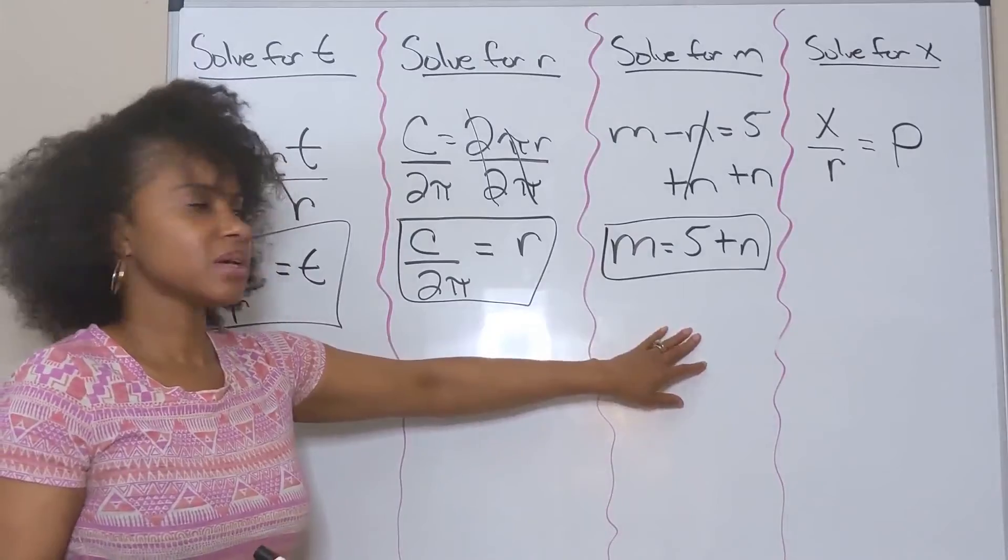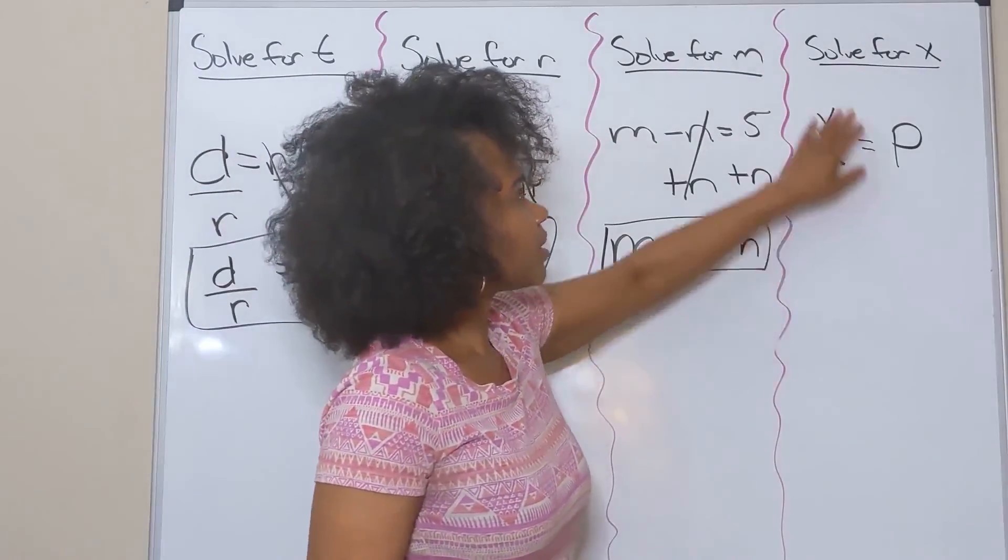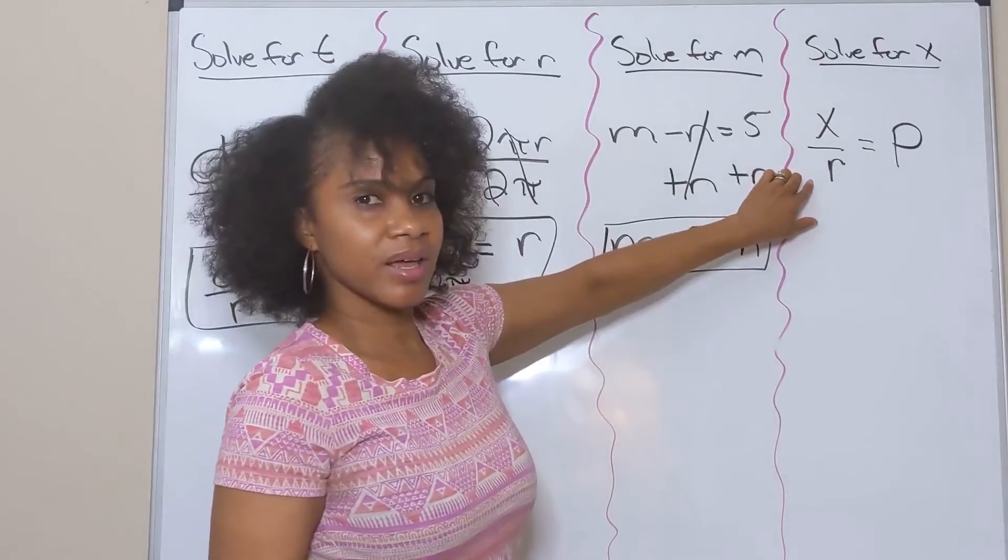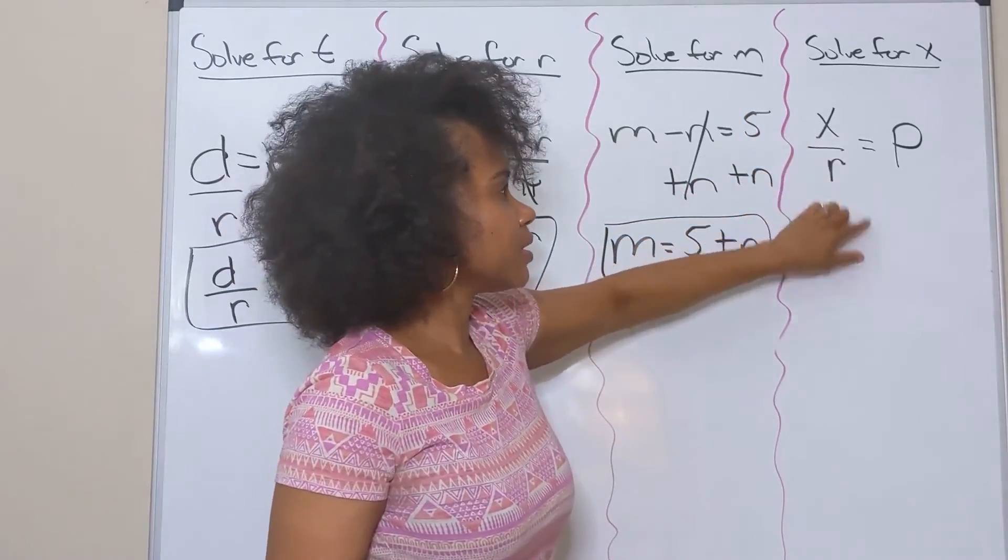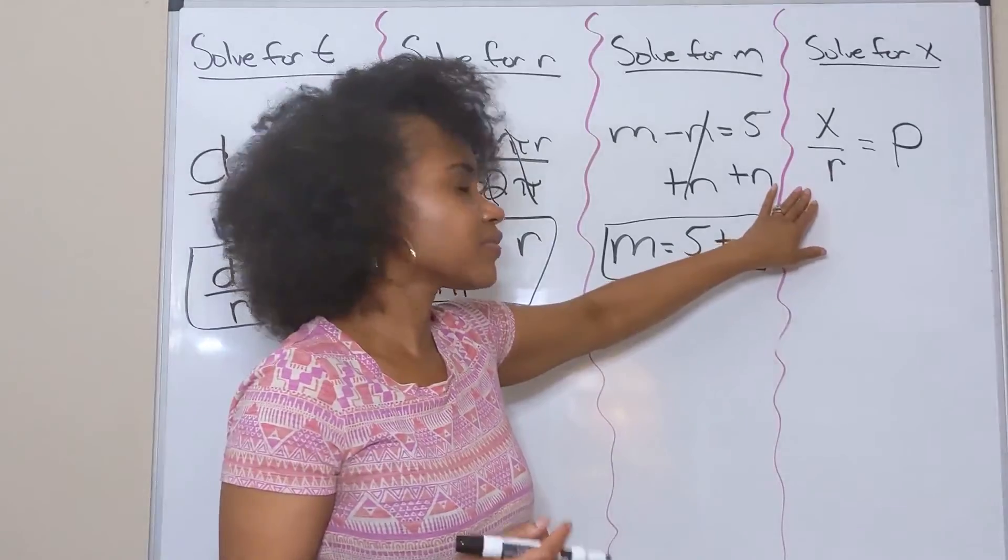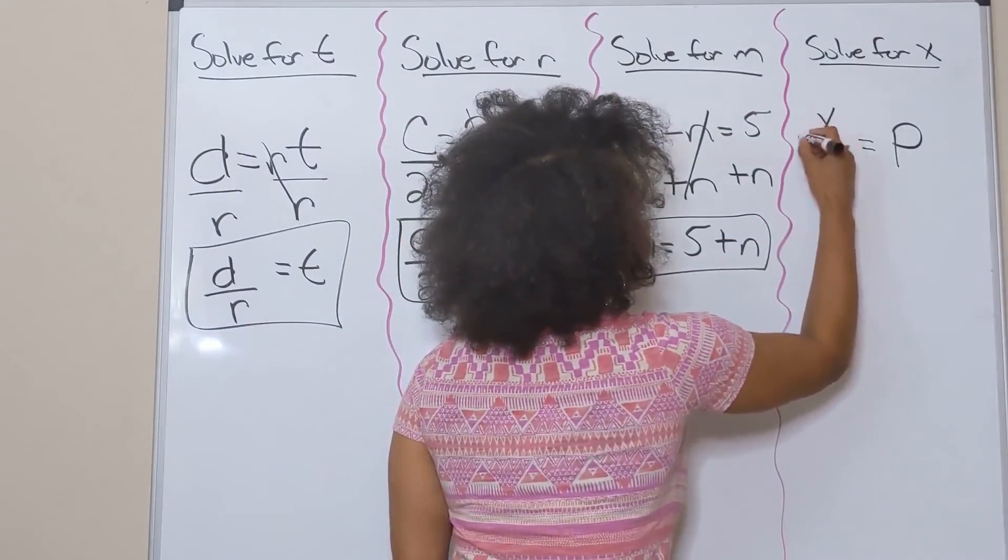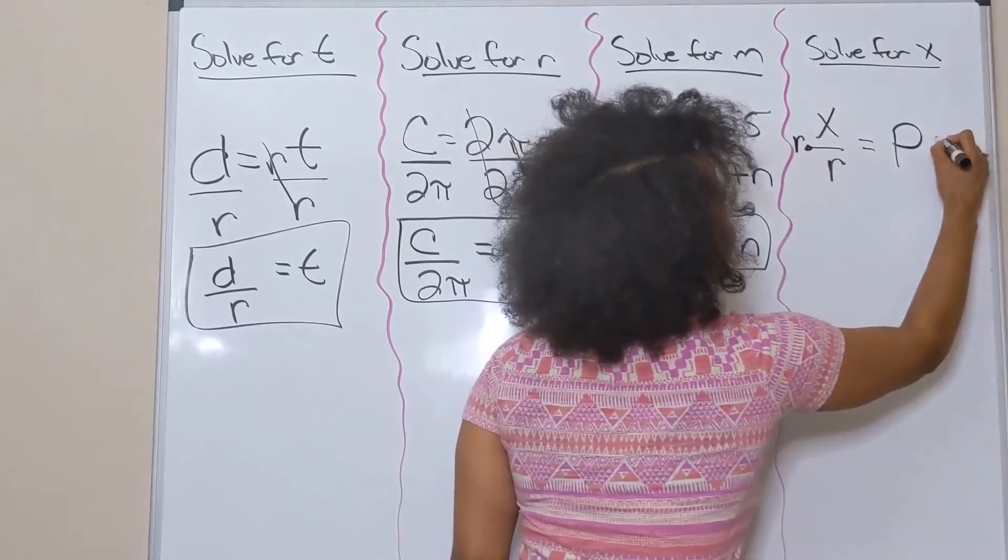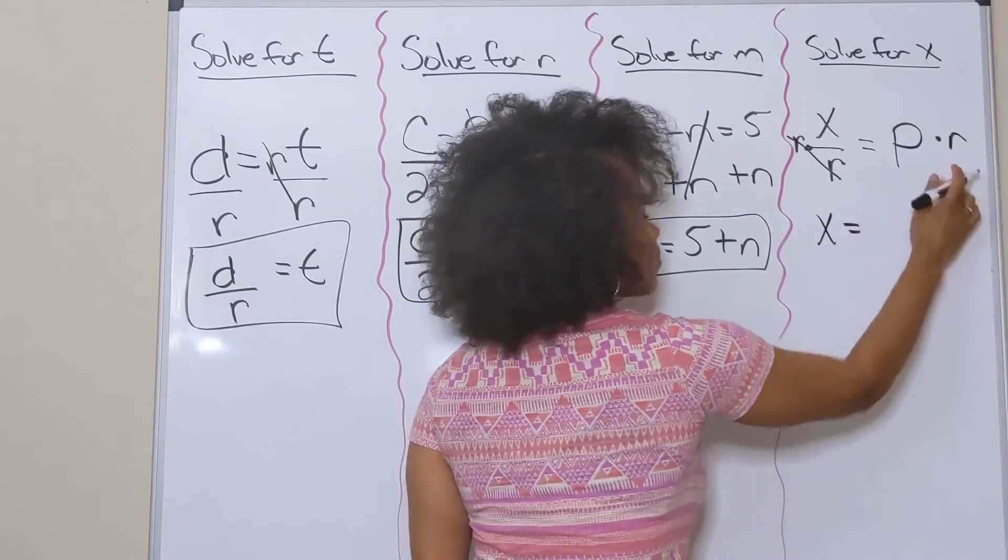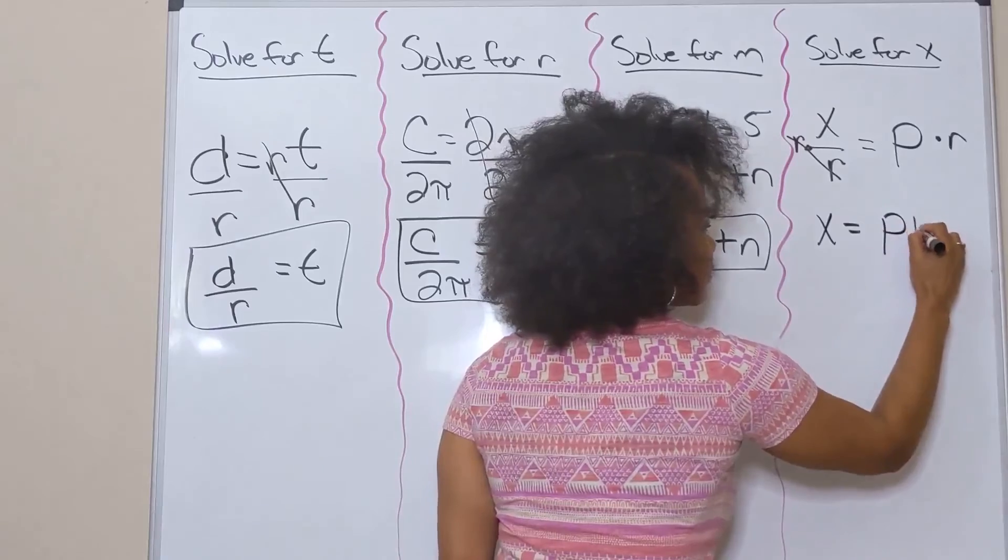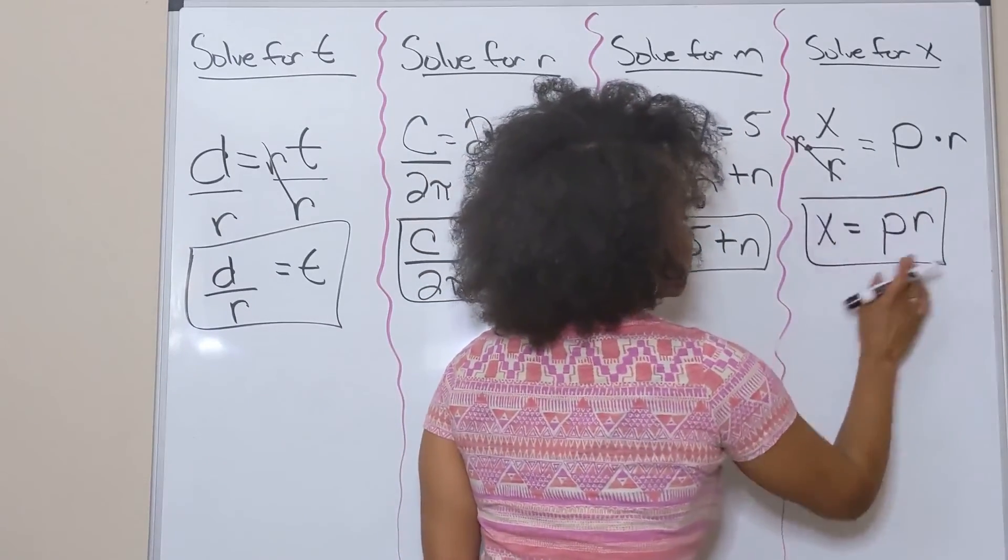My last one is solving for x. I want to isolate that x. I read this as x/r=p. The inverse of division is of course multiplication, so I'm going to multiply both sides by r. It cancels out, I bring down my x, and I write this as p times r. We write it together—we don't need that multiplication symbol—so I'm left with x=pr.